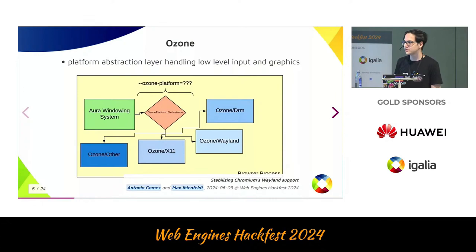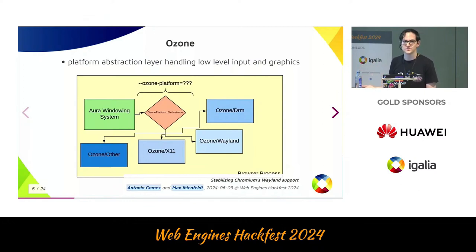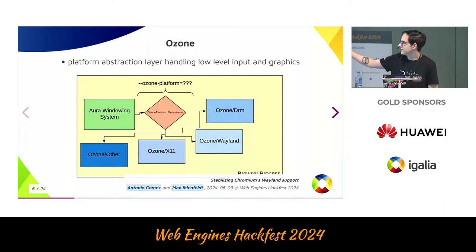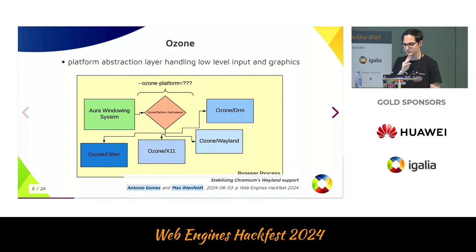I say in theory, because in practice, if your platform doesn't meet all the expectations that Ozone currently has, it won't work. As you saw in the relevant code areas, we had to touch a lot more code than just inside Ozone, because Wayland violates so many expectations the browser has — for example, that we can completely control the window position. You can see the three most important Ozone platforms that currently live upstream: Ozone Wayland, X11 which also runs via Ozone nowadays, and Ozone DRM, which is mostly relevant for Chrome OS. And now, Antonio is doing the history lesson.